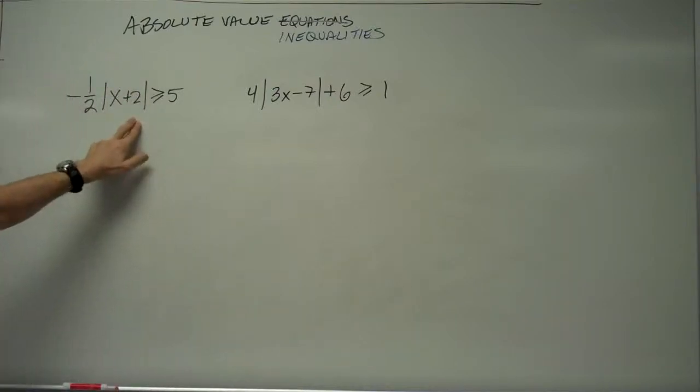First example, negative one-half times the absolute value of x plus 2 is greater than or equal to 5. All right, let's solve it. What's happening to x? We're adding 2, then taking the absolute value, then multiplying times negative one-half. So what are we going to do to solve this? We're going to divide by negative one-half. Dividing by negative one-half is the same thing as multiplying by negative 2, so let's do that.